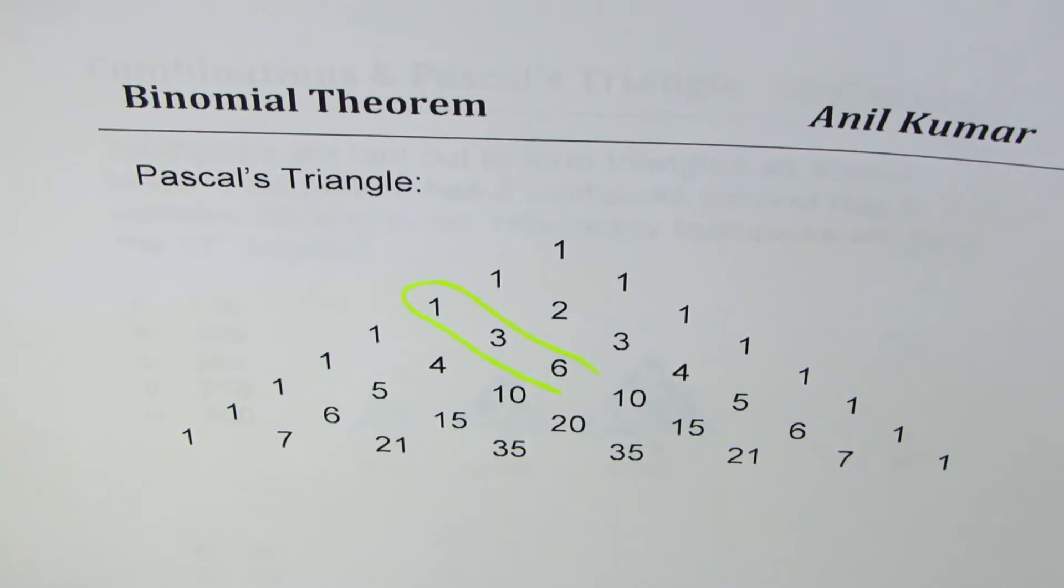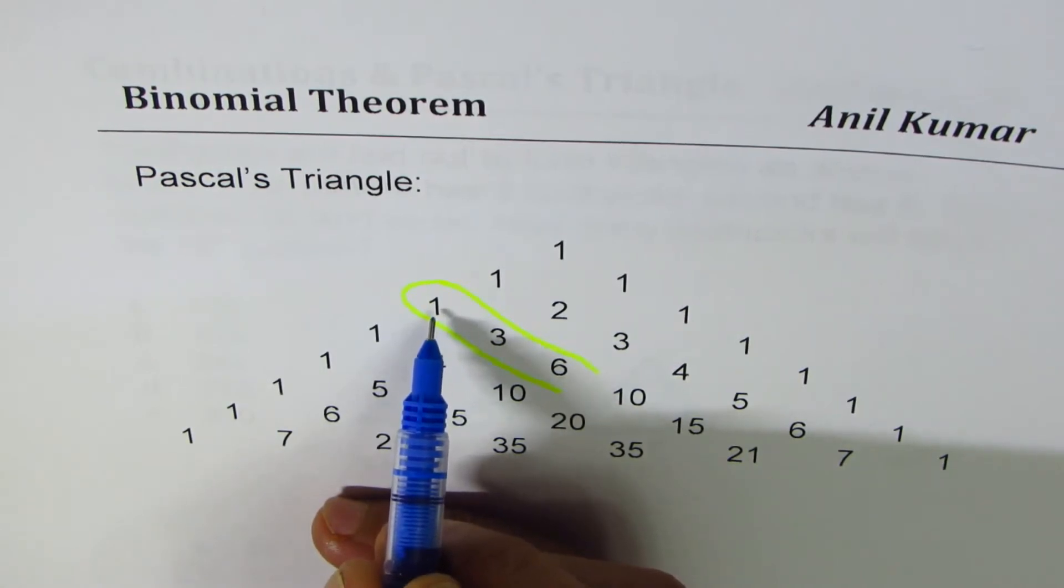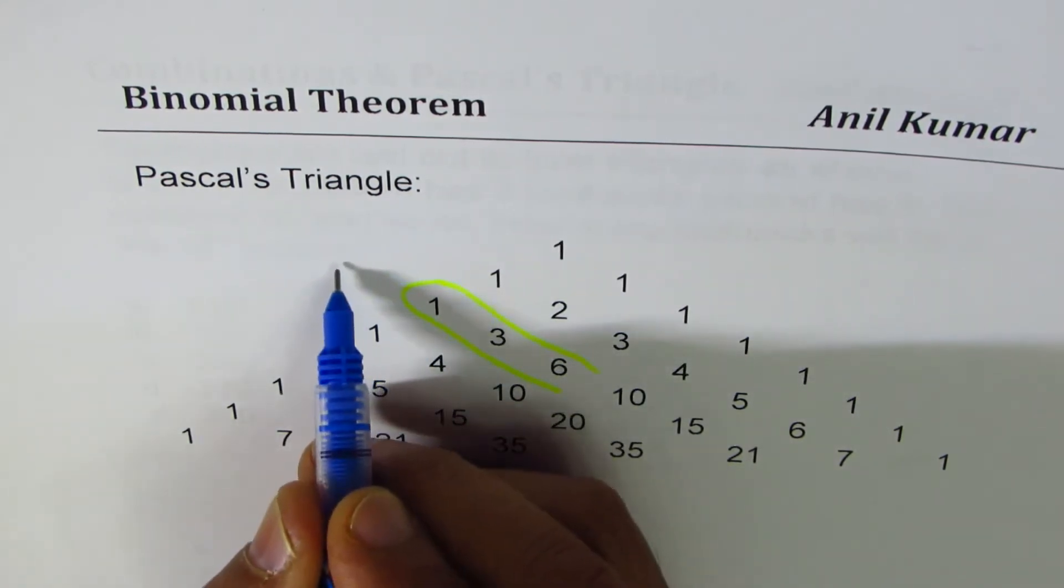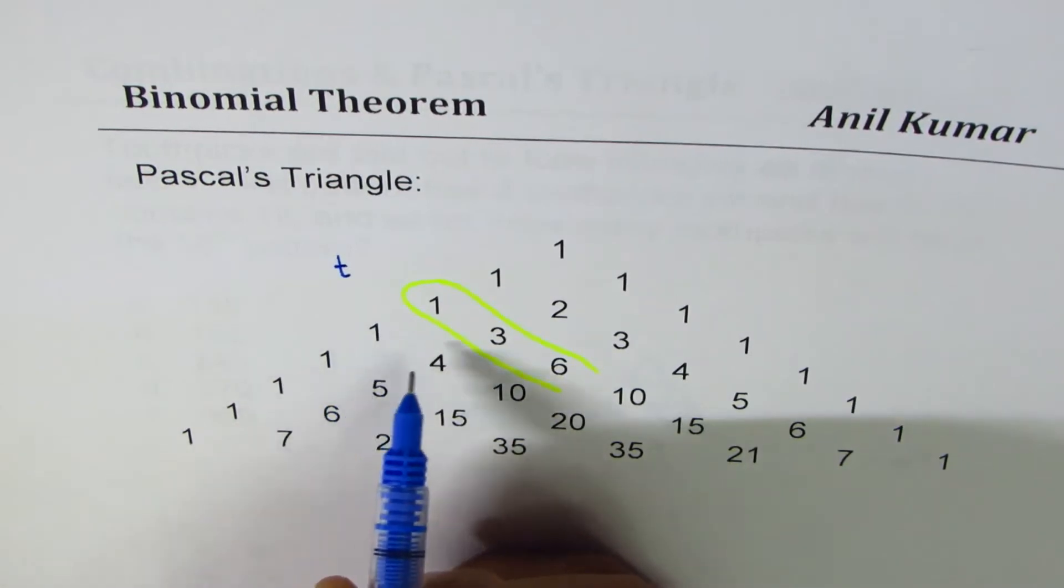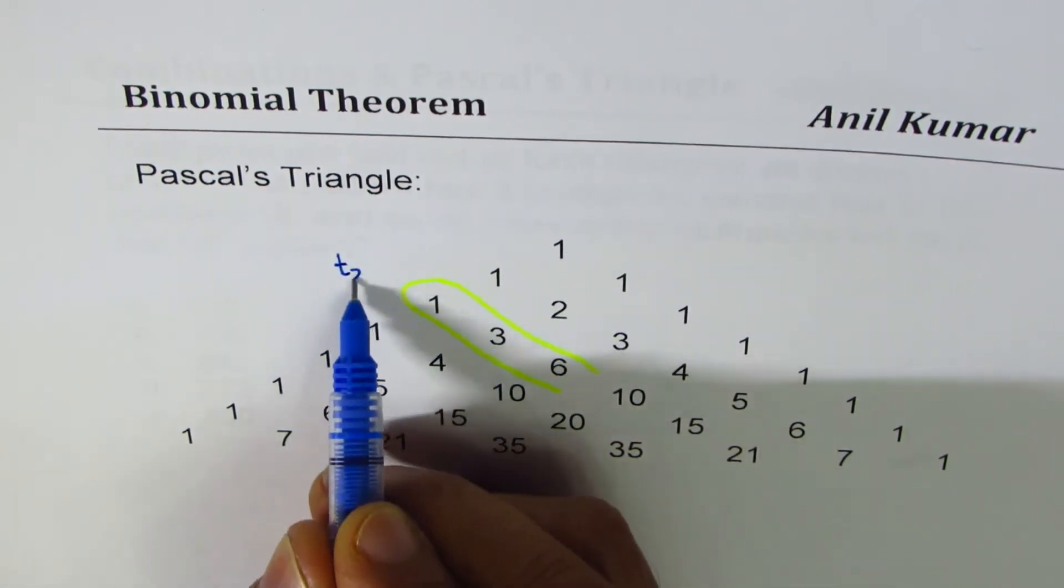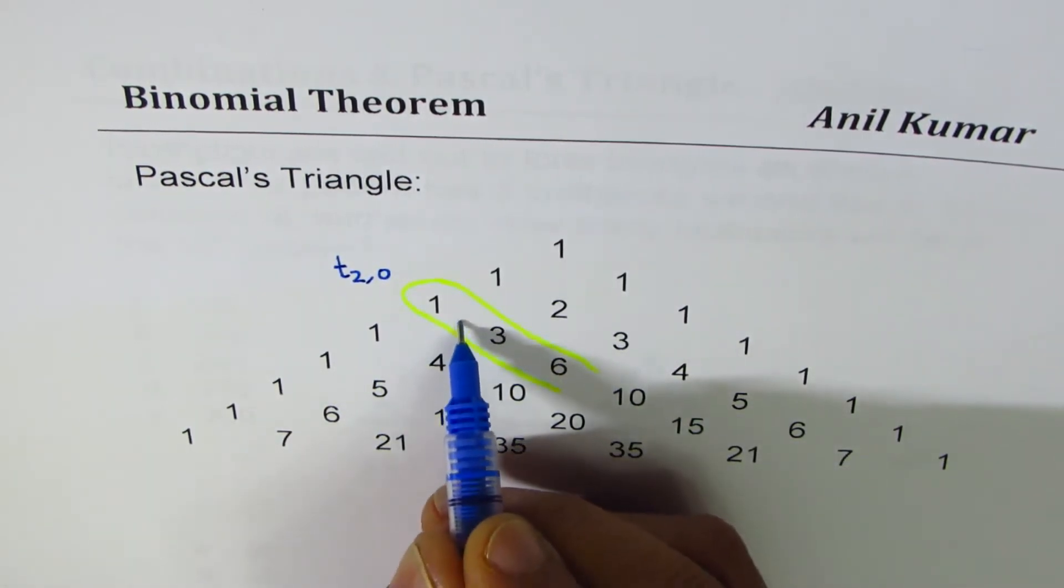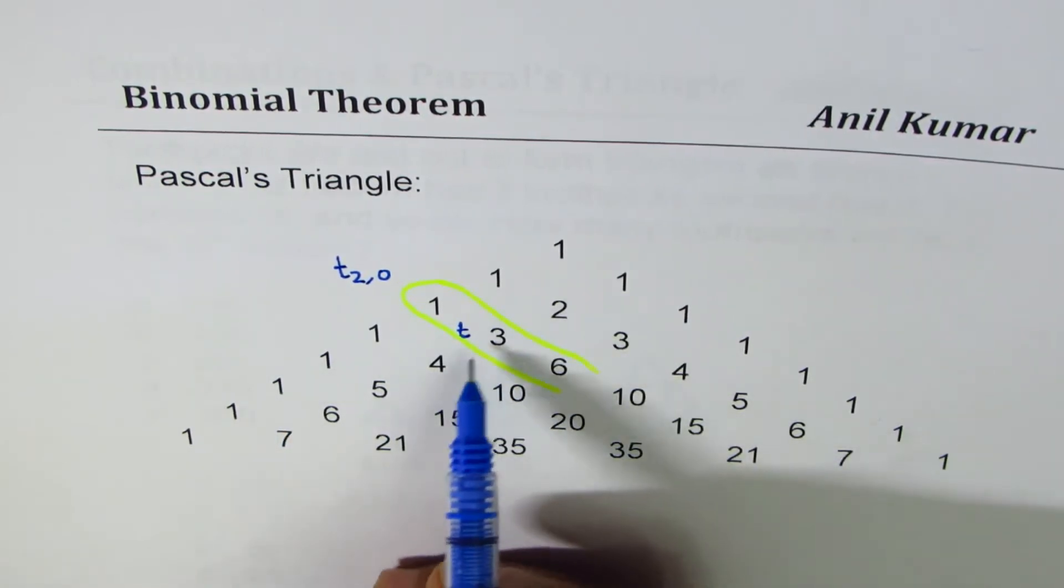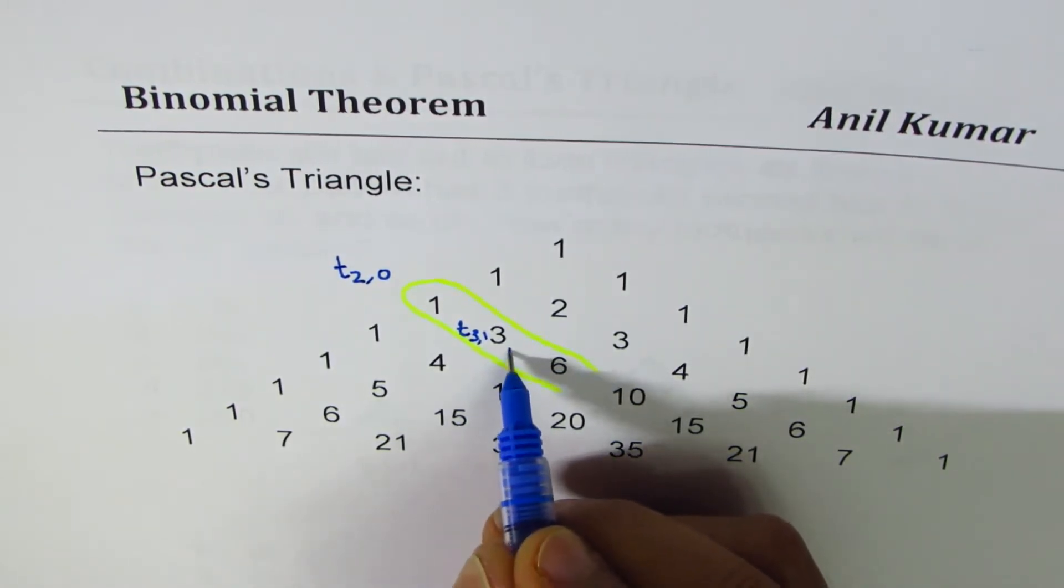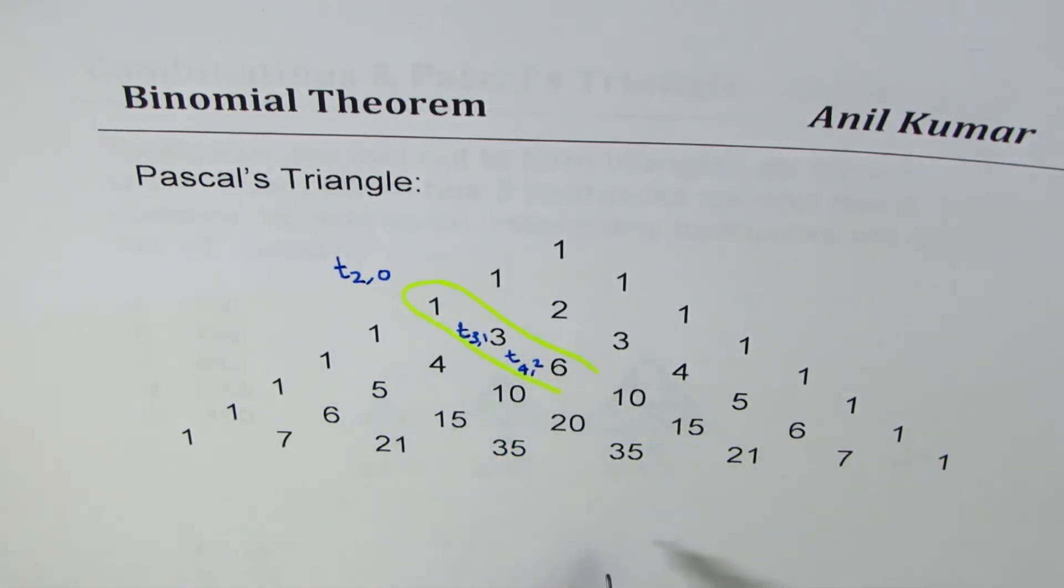If I try to write their position, then we know for the first position here, this number corresponds to the term number. So term number is basically the row number is 0, 1, 2, right? And the diagonal is 0, correct? This position here is term number 3, and the diagonal is 1. And then we have this position, which is t(4,2), correct? So that is how the pattern is moving on.